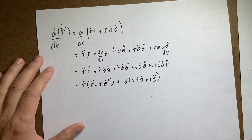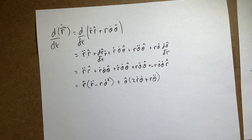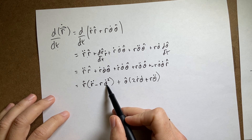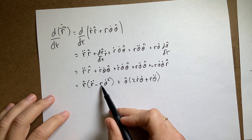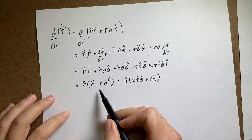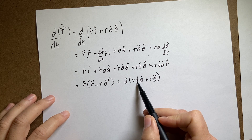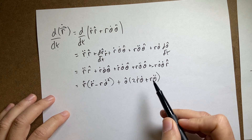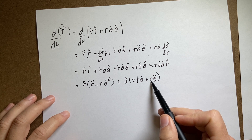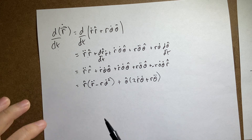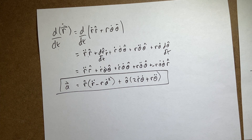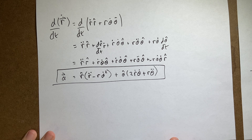That's the acceleration in polar coordinates. Let's check units — everything must be meters per second squared. r-double-dot is a space derivative twice: meters per second squared. r theta-dot-squared is meters times (radians per second squared): meters per second squared. The 2 r-dot theta-dot term is (meters per second) times (radians per second): meters per second squared. And r theta-double-dot is meters times radians per second squared: meters per second squared. All units match, confirming the result. And there you go — acceleration in polar coordinates.